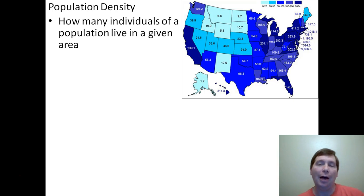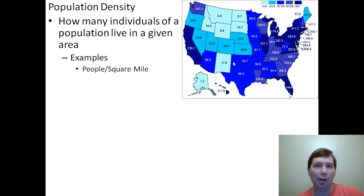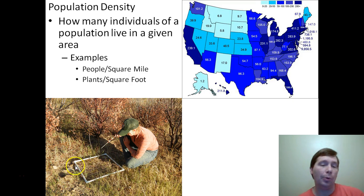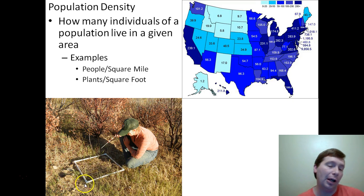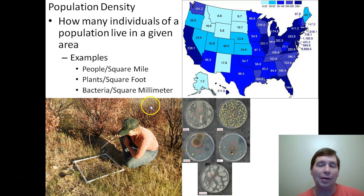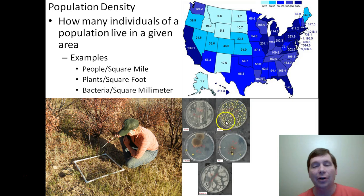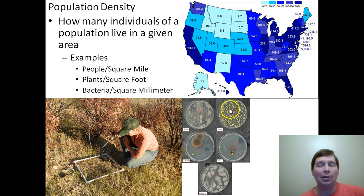Population density is a measurement of how many of the species live in a given area. We talk about people per square mile, or for plants, how many are growing in a square foot of land. Here a biologist is measuring grass out in the wild — looking at how many plants are growing in a square area, measuring the density of the plants. You can even look at bacteria — how many are growing in a square millimeter. These petri dishes show bacteria colonies, with about a million bacteria in each dot, illustrating the difference in population density between dishes.